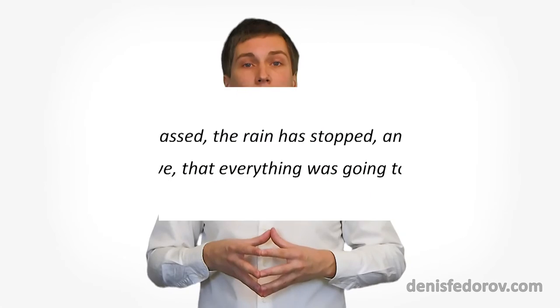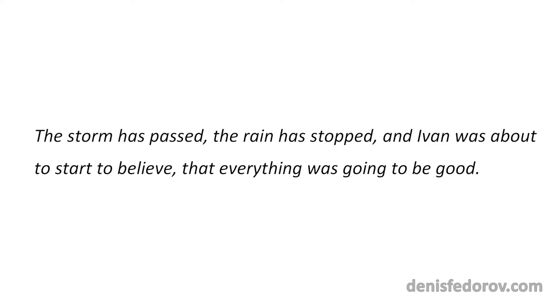So the main concept you need to learn about Russian punctuation: if the subject changes, that part of the sentence should be separated with a punctuation mark — usually a comma. On this reason you will meet very big sentences consisting of smaller parts where there will be 2, 3, 4, 5 subjects, and these parts with different subjects will always be divided by commas. Like: 'The storm has passed, the rain has stopped, and Ivan was about to start to believe that everything was going to be good.' First the subject was the storm, then rain, then Ivan, then everything.